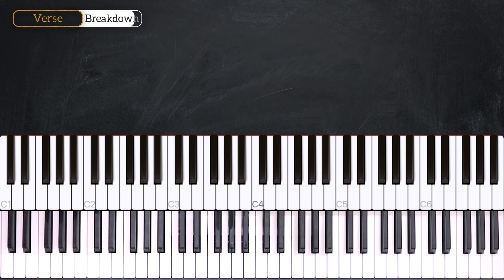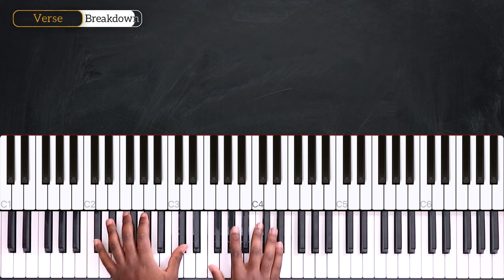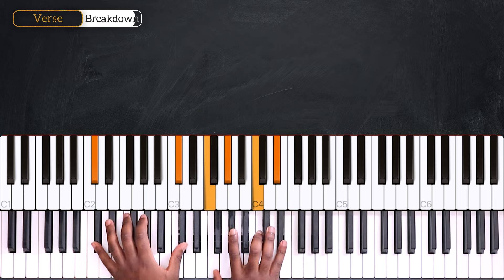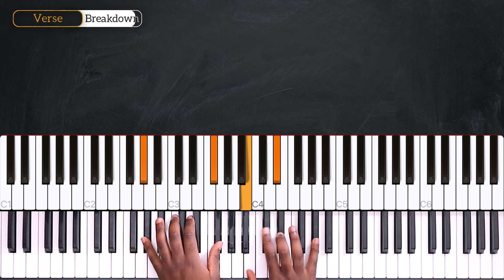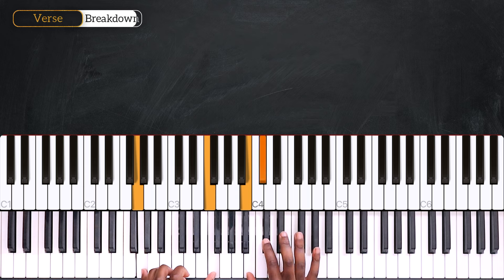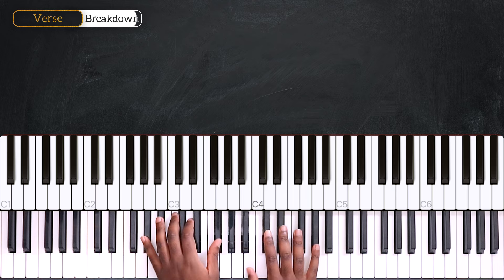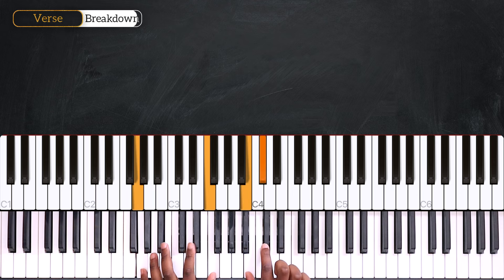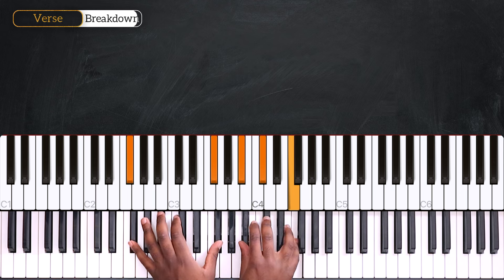Okay, now we have again Dbm9. And after that, we're playing Abm7. Then play one Eb on the right hand and use this passing chord. I'm playing G and F with B and Db.